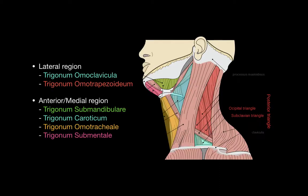In this video I'm going to talk about the topography of the neck. The triangles I'm going to talk about are located in two regions: the lateral region and the anterior or medial region. Let's start with the lateral region, and as I finish with one region I'm going to show you on my 3D model of the human simultaneously.